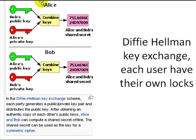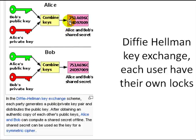You won't be using public key and private key for sending data every day when talking to a website, because it is expensive to encrypt data using public key cryptography — it involves a lot of number crunching. So what both sides — say Alice and Bob — need to do is come up with a shared secret, which is a common password or key. They want to come up with this common password without sending it over the internet.